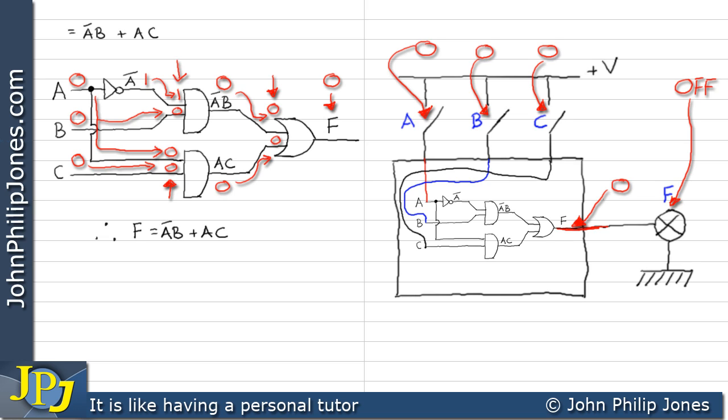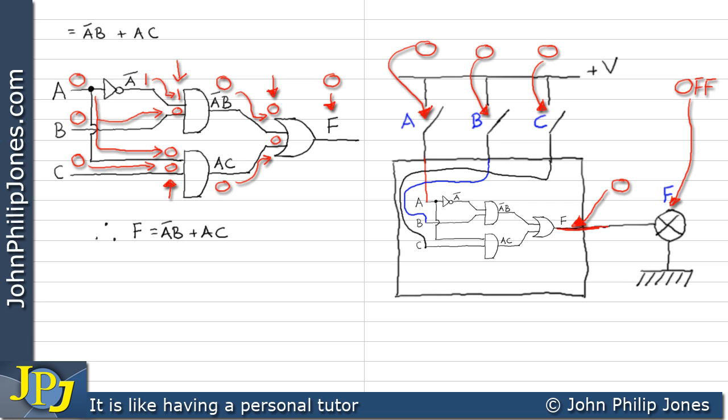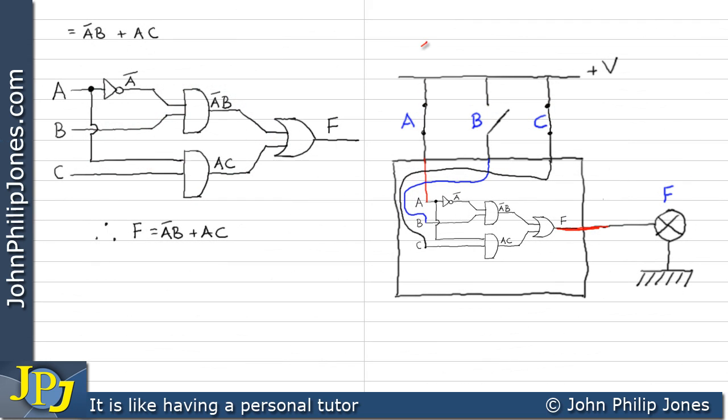Let's choose an example where we do have a prime number at the input. Now we have a one at A because the switch is closed. We have a zero at B because the switch is open. And C is obviously a one because the switch is closed.